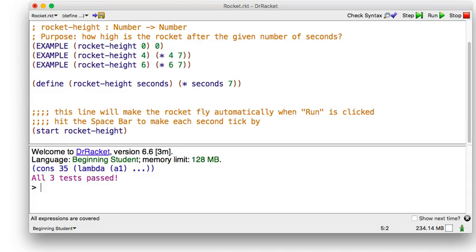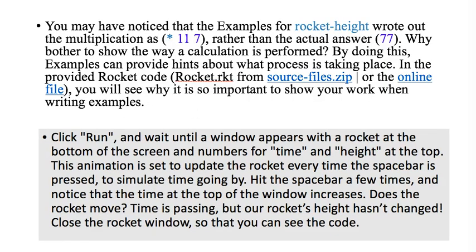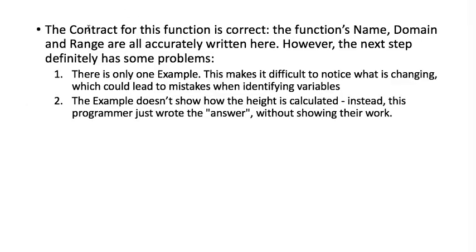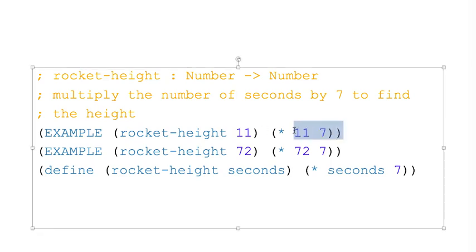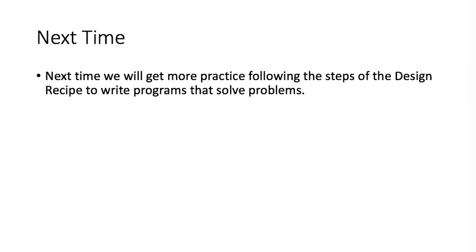Hopefully you have a working rocket program now. We don't want to just write the answer in the example — we want to actually write out how to arrive at the answer. That makes it much easier to then write the correct calculation in our function definition. If we write out the calculation in the example, it makes it much easier to write the correct calculation in our function definition. That's it for today. Next time, we'll get more practice following the steps of the design recipe, and we'll work through more problems together.